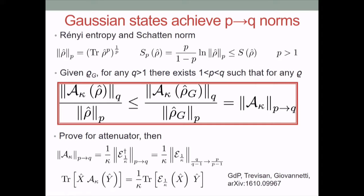For the amplifier and all other channels, one could try using the same proof — proving the infinitesimal inequality with Lagrange multipliers. But now even if the input state has finite support, the output state will always have full support. This causes problems with Lagrange multipliers because Gaussian states are no longer the only solution to the Lagrange multiplier equations, so we have to change strategy.